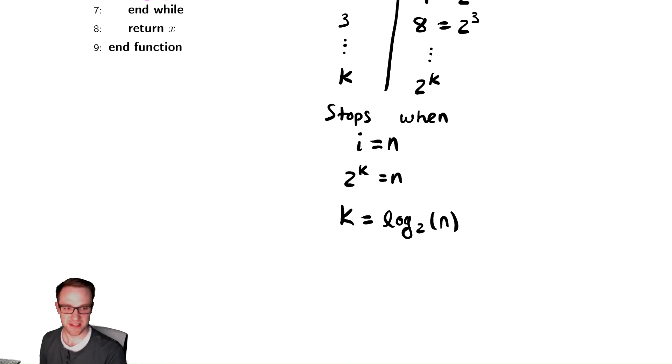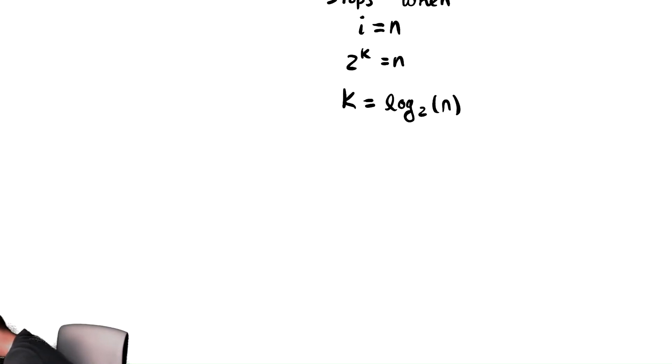And just with our previous example, we saw that the way we compute the total running time is by taking the number of iterations and multiplying by the cost of each iteration. So t of n is just equal to c times log base 2 of n. Which means t of n is in theta of log of n. Thus, t of n is in theta of log n.